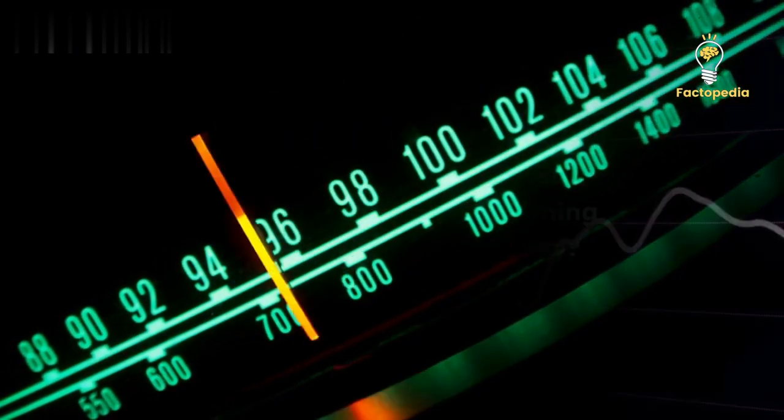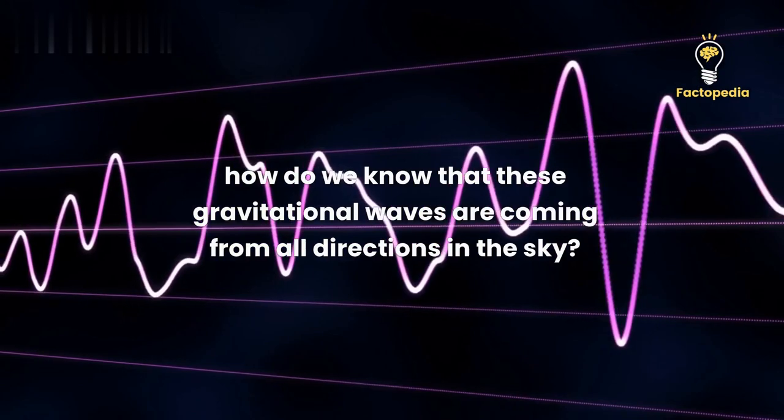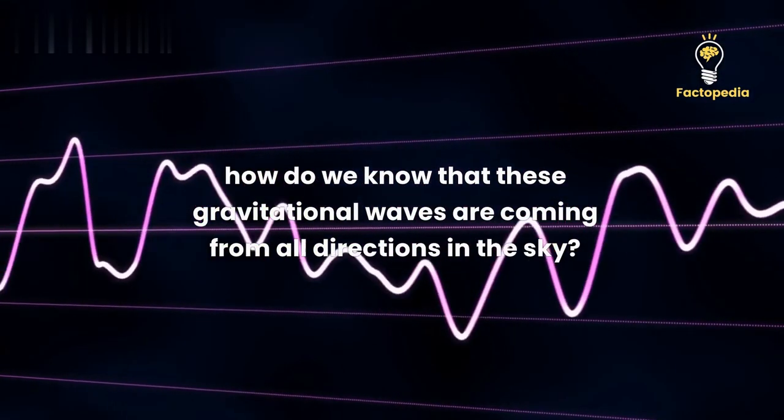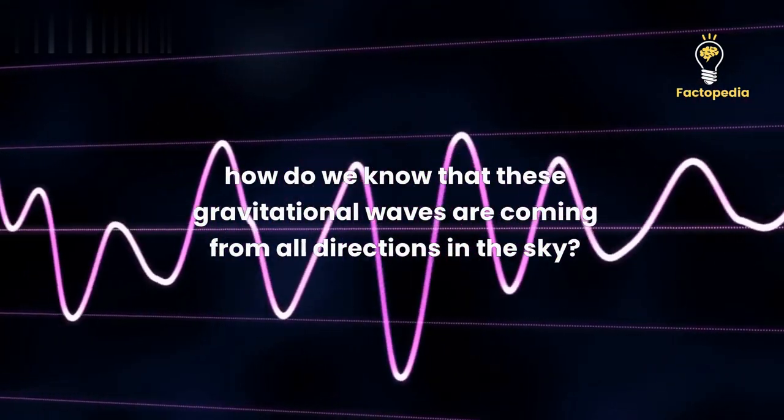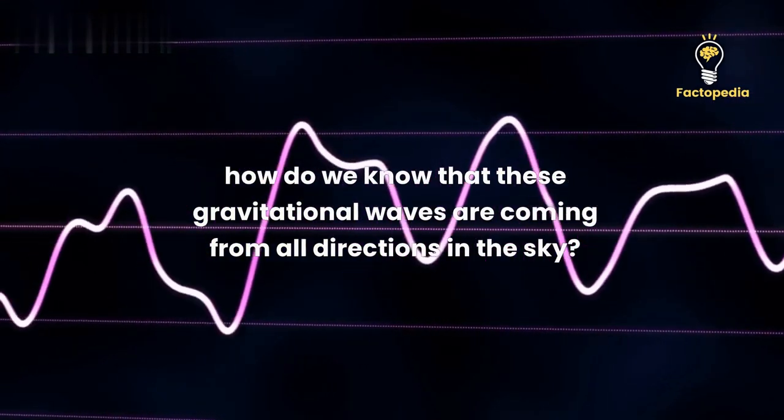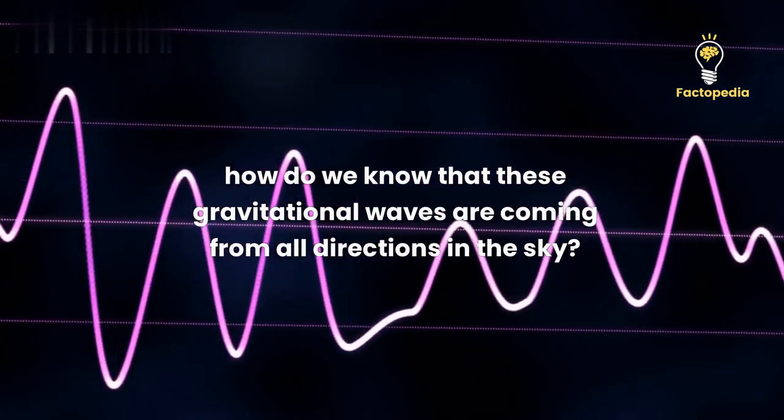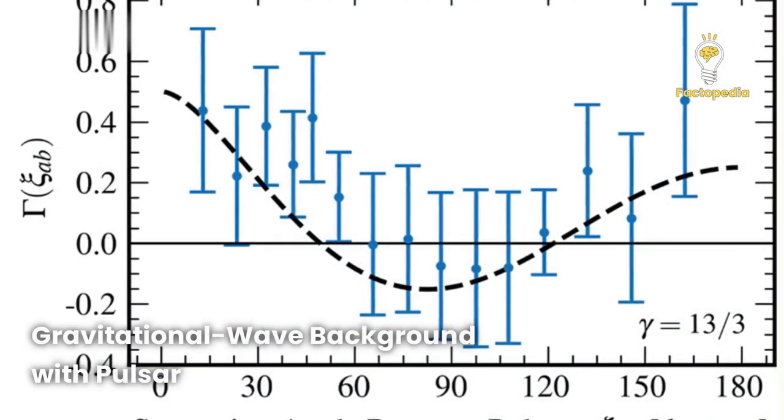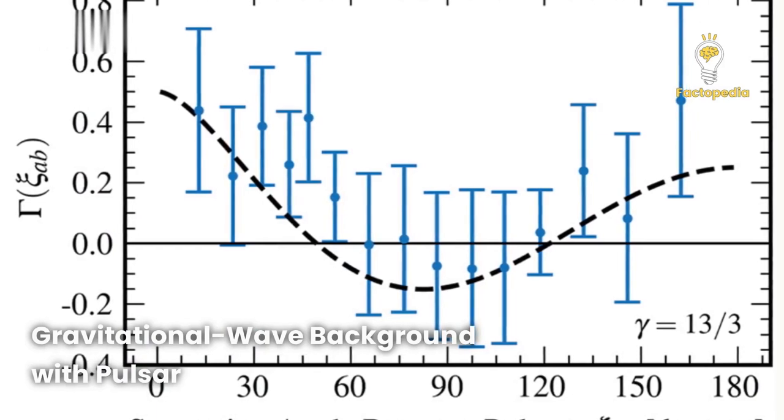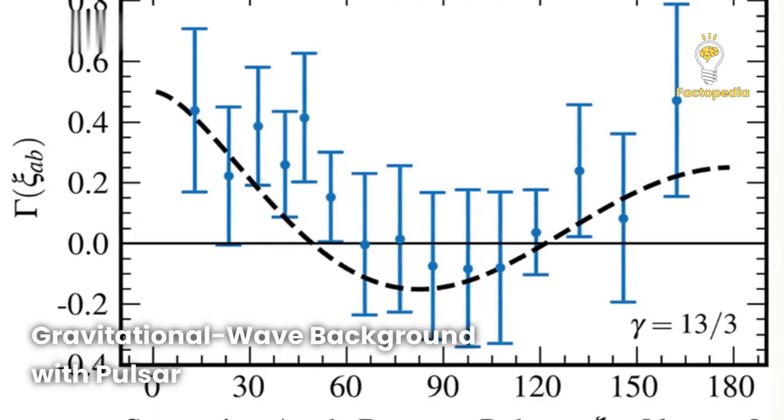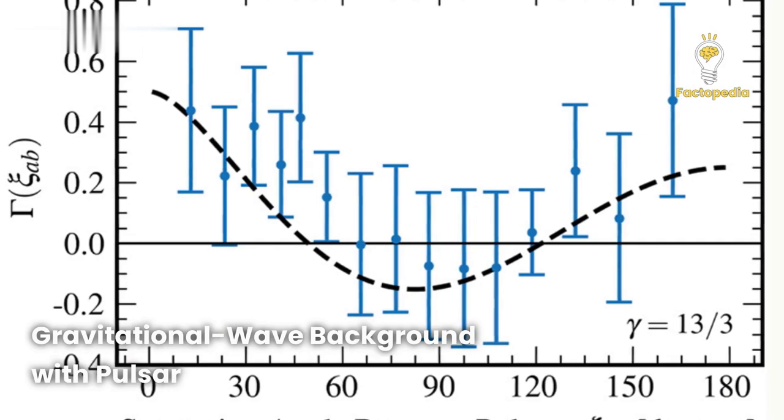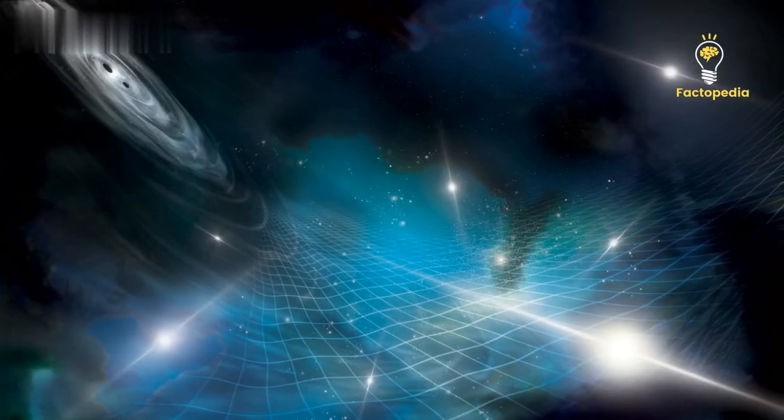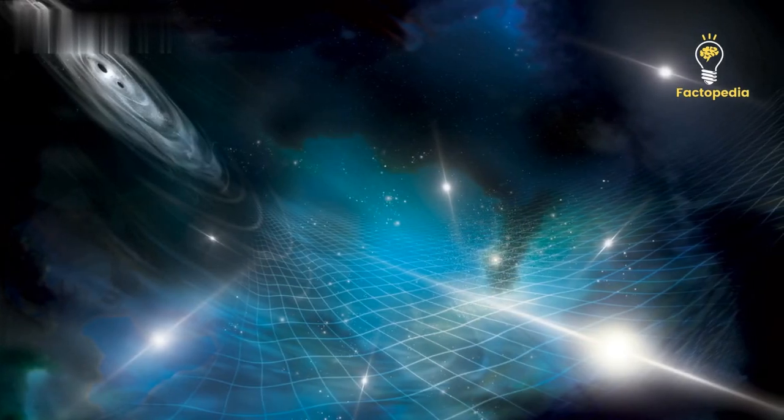But how do we know that these gravitational waves are coming from all directions in the sky? Well, astronomers studied a distinctive pattern called the Hellings and Downs curve. It's a relationship between the angular separation of pulsar pairs in the sky and the correlation between their delayed timings. When they examined the timing data of multiple pairs of pulsars, a remarkable curve emerged.